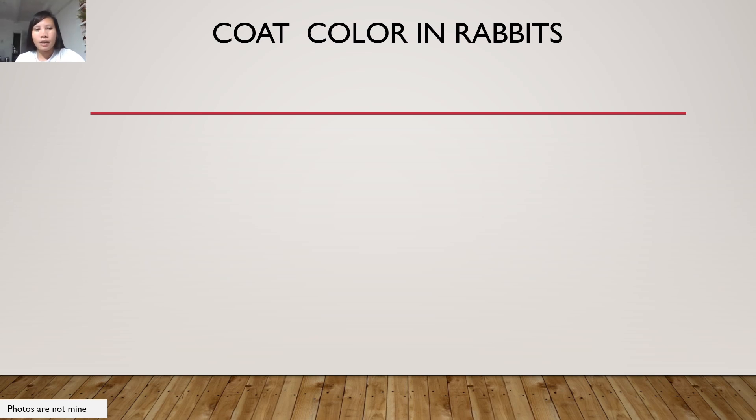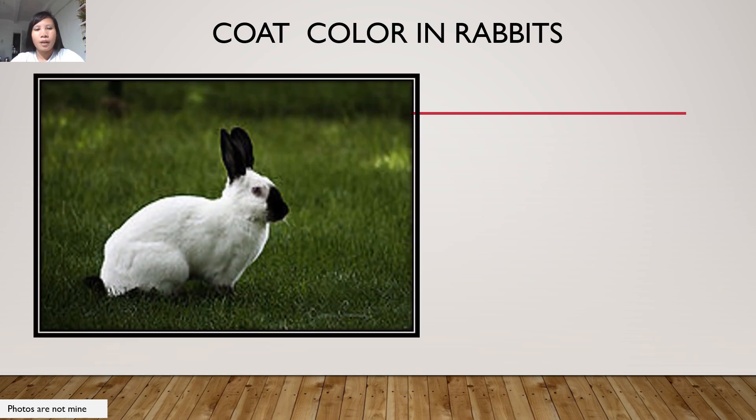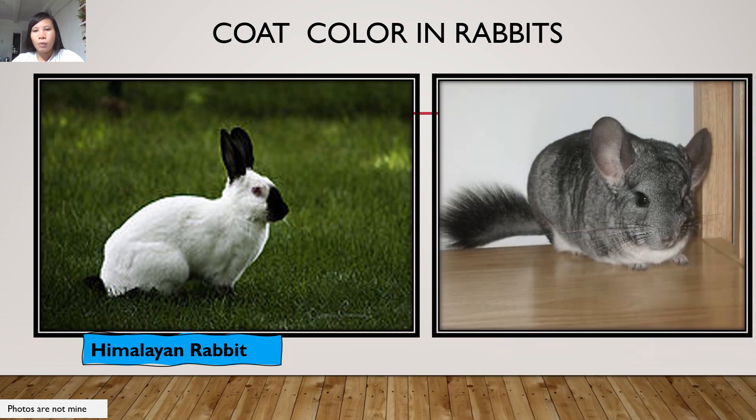Let us have an example. A rabbit with white hair on its body and black hair on part of the ears and the nose and on the toes. We call this rabbit the Himalayan rabbit. And then another fur color in rabbit is the grayish one, and we call this the Chinchilla rabbit.